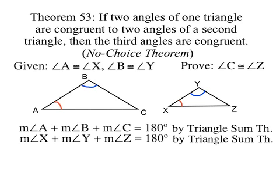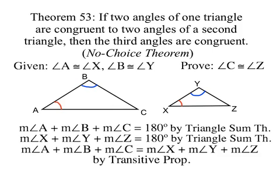Because of the triangle sum theorem, we know that the three angles of each of the triangles are equal to 180. Since the sum of the measures of the three angles of each triangle are equal to 180, we know that the sum of the measures of each triangle are equal to each other by the transitive property.